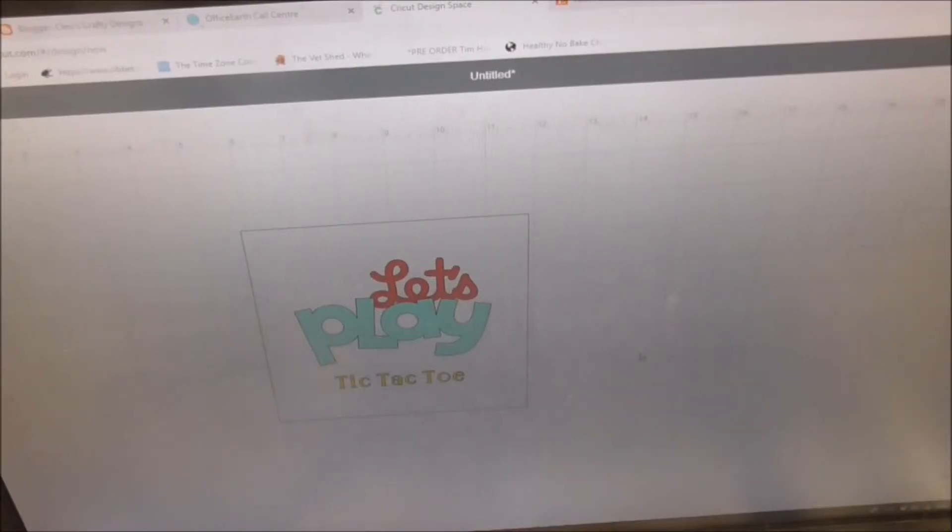I'll just pull in Design Studio in a second. I've just made this square which is six by six because that's the size of my bag and it just says let's play. I end up having to purchase the let's play as it's not part of the Cricut subscription and then I just use a font that I found on the Cricut in Design Studio to cut out the tic-tac-toe.